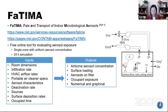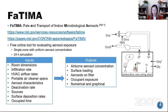The outputs from FATIMA include the airborne aerosol concentration and surface loading — how much of the aerosols deposit on the floor, ceiling, and other surfaces, and how many were deposited on the filter. The key output is occupant exposure: how much a person is exposed to based on the airborne concentration. The results are both numerical and graphical.